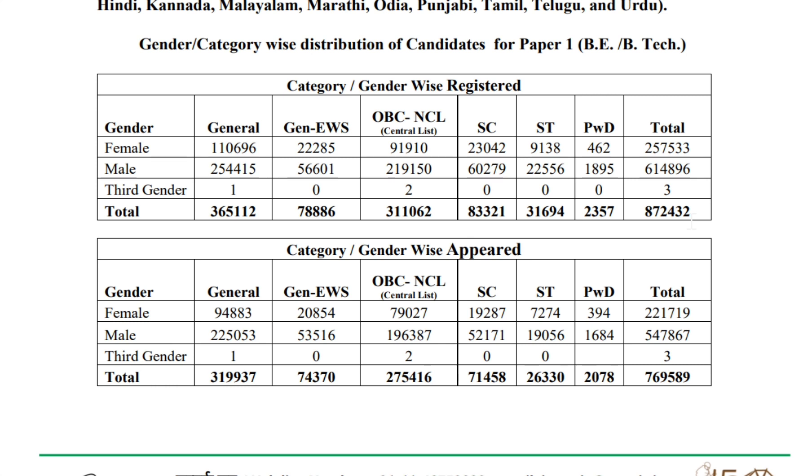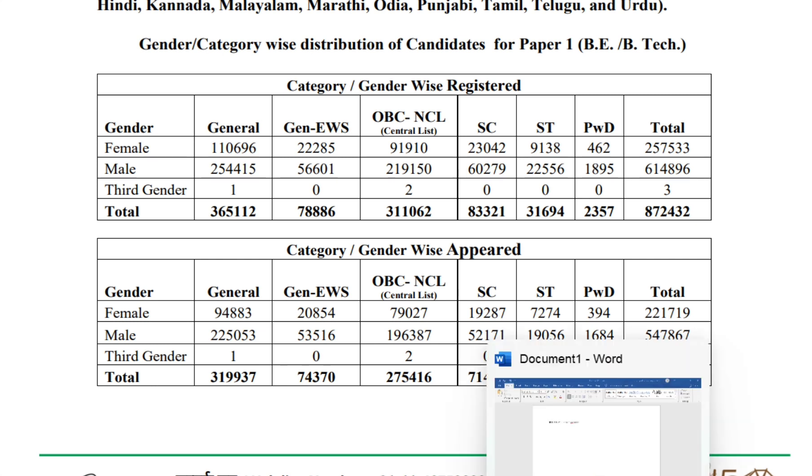Using this, we can calculate your rank. The formula is: (100 minus percentile) divided by 100, into number of candidates plus 1. This is the formula to calculate your rank.